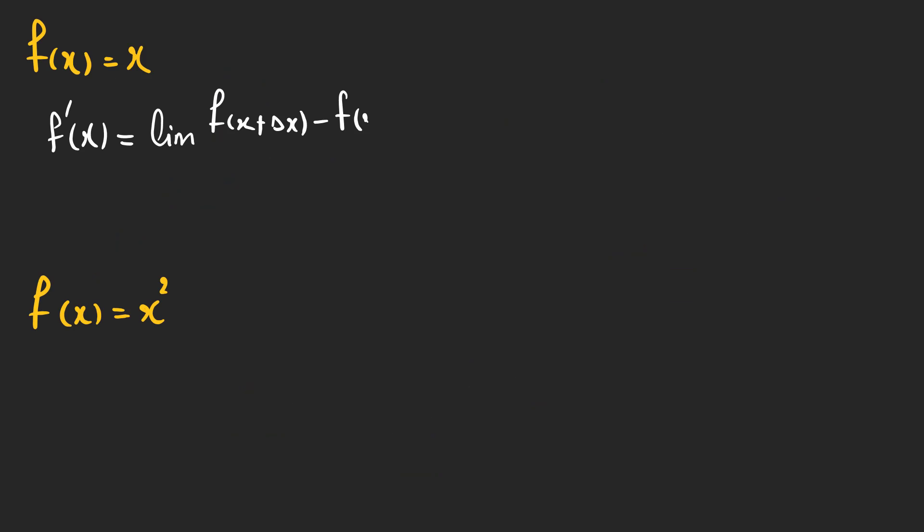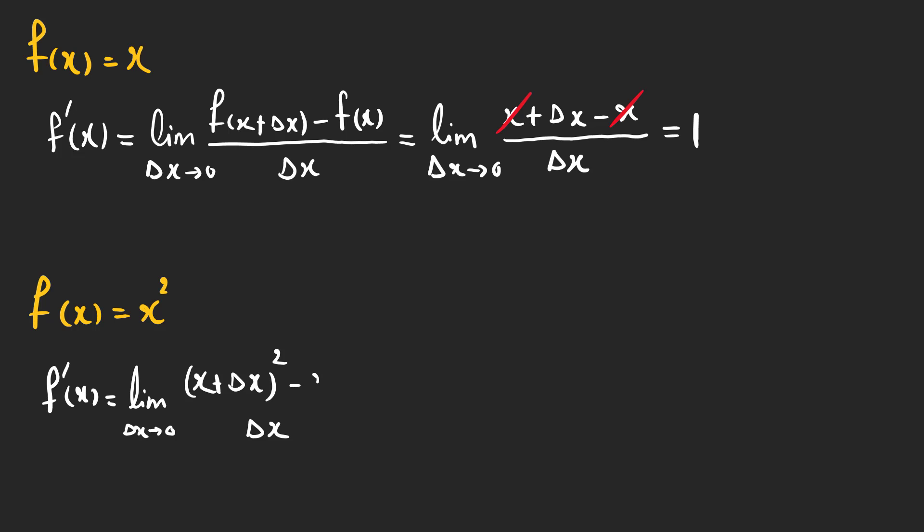As you can see, the derivative of x with respect to x is 1. The derivative of x squared with respect to x is 2x. And pay attention, the delta x squared goes to zero because delta x is very small and we can just ignore delta x squared when we have a very bigger term 2x delta x.